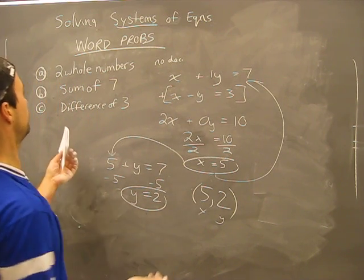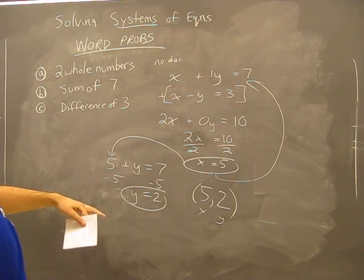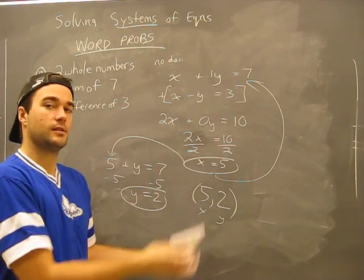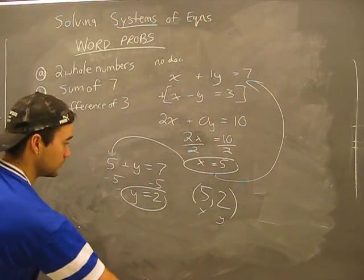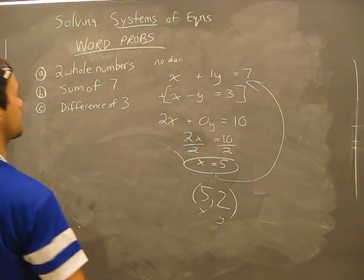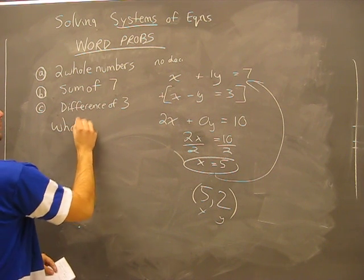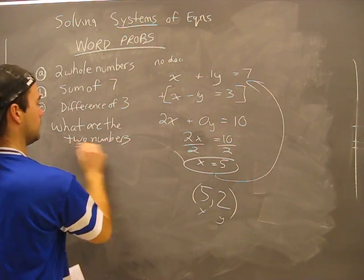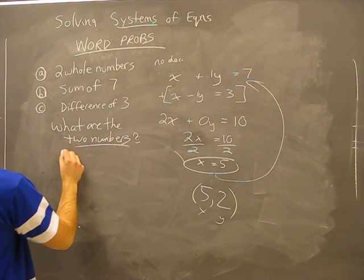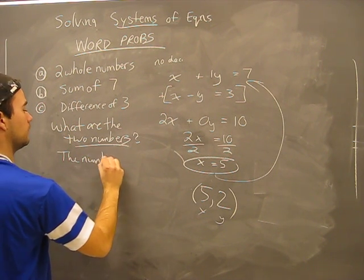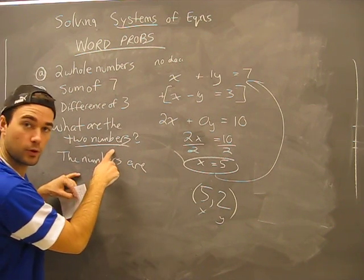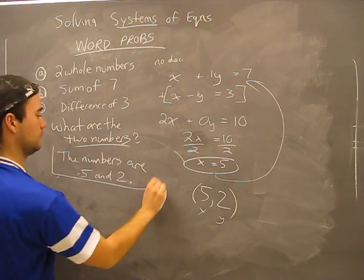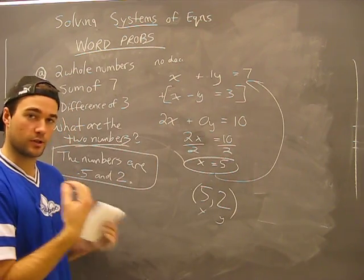If we were to graph this thing, but what are we looking for here? Word problems. Well, here's our two numbers: five and two. So we have to answer the question in the same phrasing of how the question was asked. I should ask the question in the beginning. The question is: what are the two numbers? The answer is, just like the question was asked, the numbers are five and two. Here's your answer in words, just like the question is given in words.